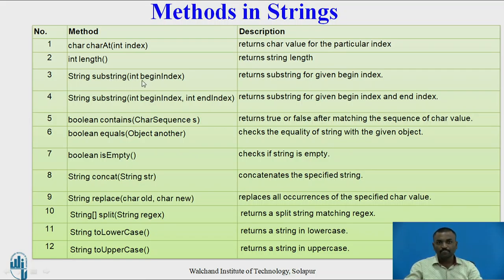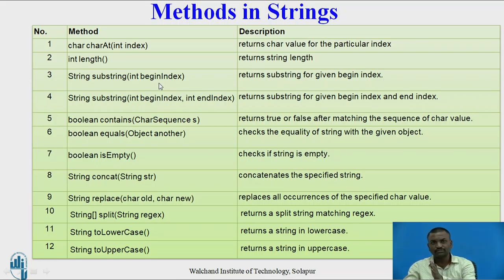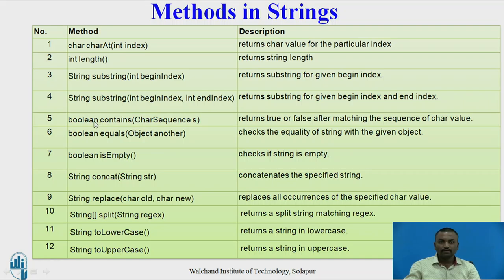Similarly, substring with an int begin index gives a substring starting from a specified index and going to the end of the string. There is also a second version of substring that takes both a begin index and an end index, allowing you to extract a substring between two specific positions. In the first case, only the start location is specified; in the second case, both start and end locations are specified.